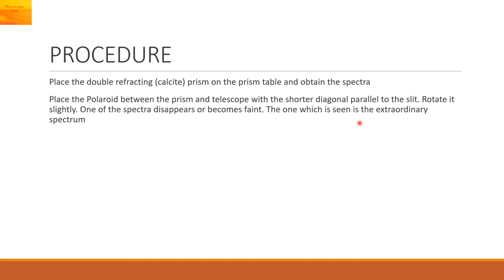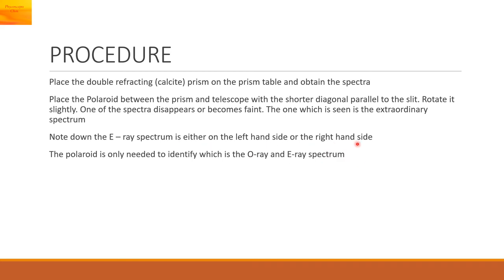Note down the extraordinary ray spectrum. It is either on the left hand side or on the right hand side. The polaroid is only needed to identify which is the ordinary ray and the extraordinary ray spectrum.